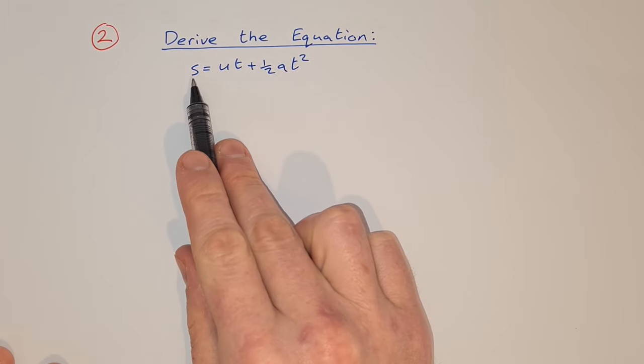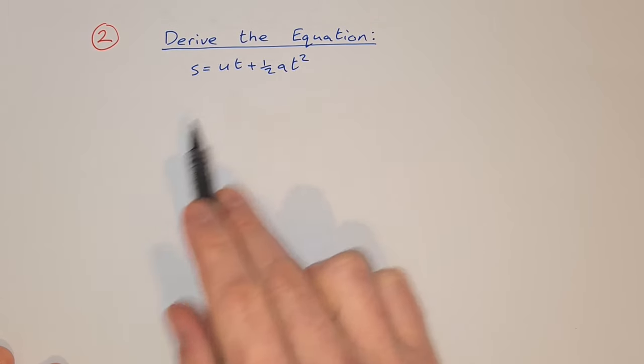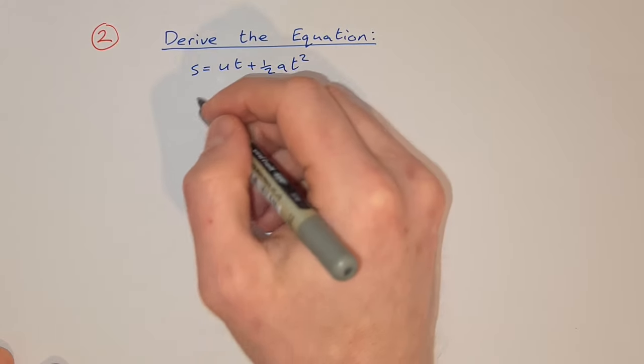We're asked to derive the equation s equals ut plus half at squared. So to start with this one,